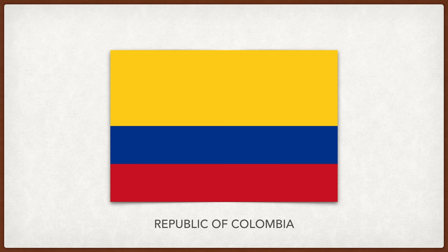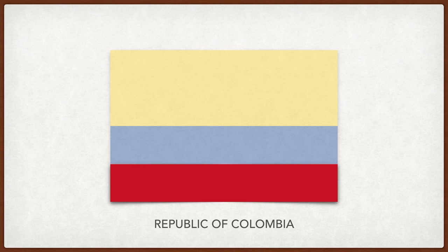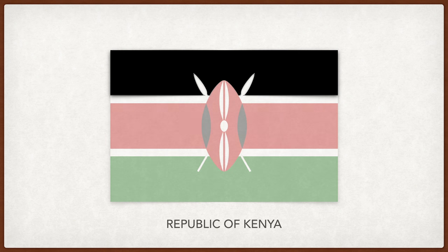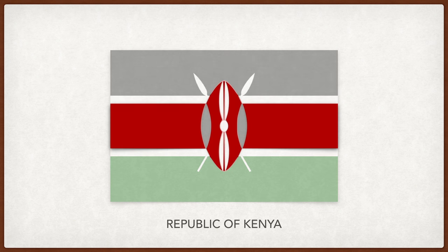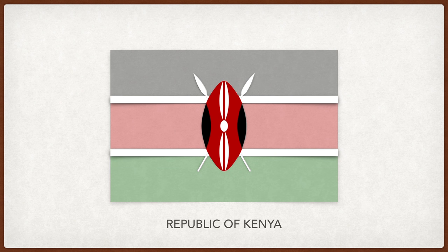Colombia. Yellow represents justice, blue loyalty, and red the victory against the Spanish for independence. A popular children's song says that yellow represents the gold that Colombia had before the Spanish came, blue the two oceans it borders, and red the blood spilled for independence. Kenya. Black is for the Kenyan people, red is for the blood spilled for independence, and green is for the land and wealth. The shields and spears in the center stand for defense of the country's people, independence, and land.